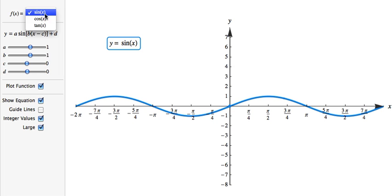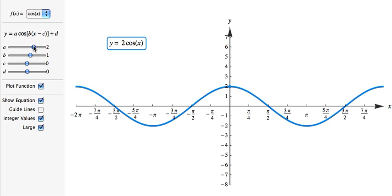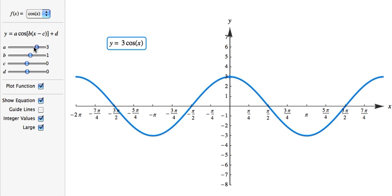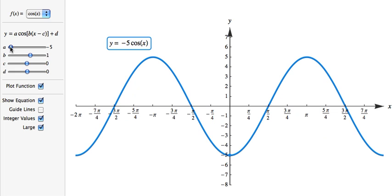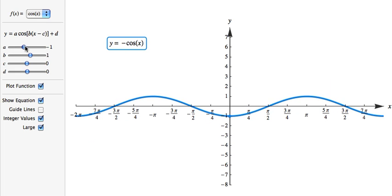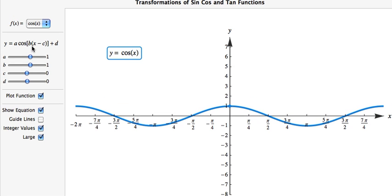So we can do the same thing for the cosine function. Same kind of thing. We increase a. And it goes up. We decrease a. And it flips over the x-axis. Yet it's still the range increases. And what we call that is the amplitude. The amplitude of a sine or cosine function would be how high it goes from the middle.